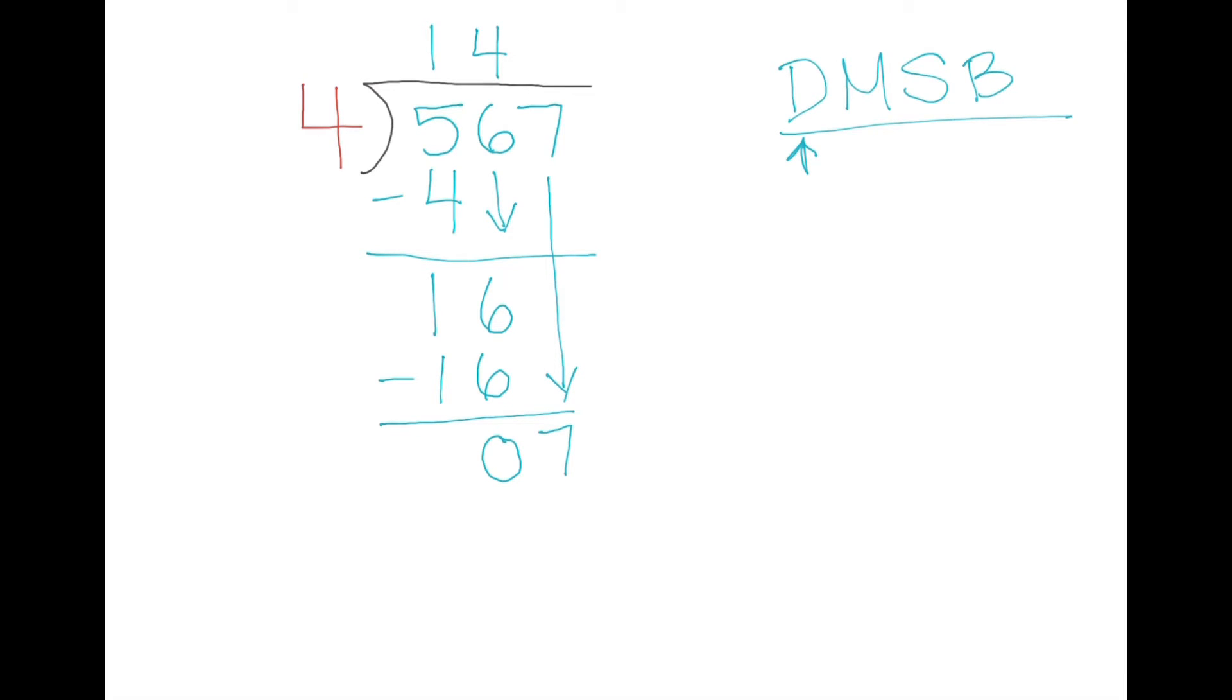Do it again! So divide, 7 divided by 4 is 1, 1 times 4 equals 4, subtract, 7 minus 4 equals 3, and we can see that there's nothing left to bring down, so we know that 3 must be our remainder.